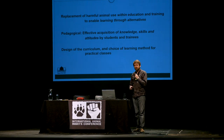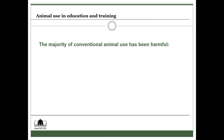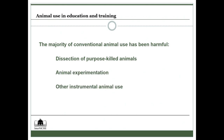It's very much about the design of the curriculum, which tools and approaches are used. Are they humane tools? Are they good tools? The majority of conventional harmful animal use in education has been harmful. This includes dissection of purpose-killed animals, animal experimentation itself, and other instrumental animal use that doesn't fit into those two categories. These are the three areas where animals might be used harmfully.